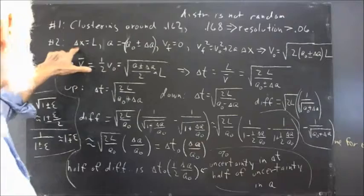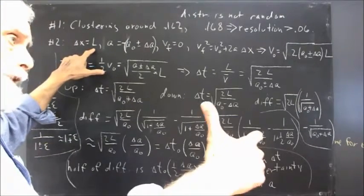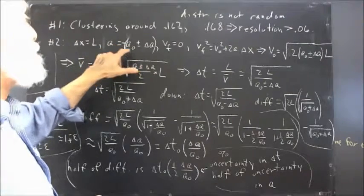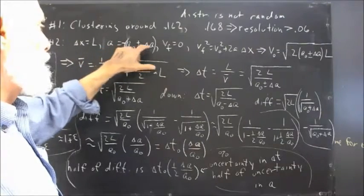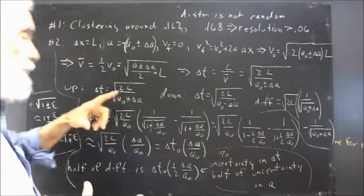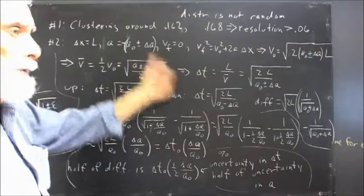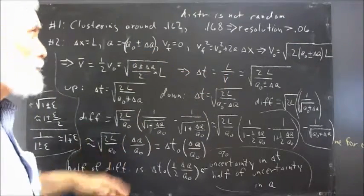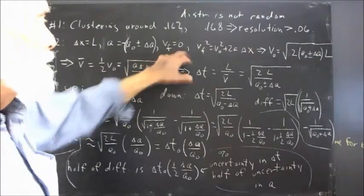So what we know is delta X equals L, the distance the ball travels up or down the incline, the acceleration is negative of either A naught plus or minus delta A, and negative because if delta X is L, it's positive, and the acceleration is going to be in the direction down the incline. So it's got to be negative.